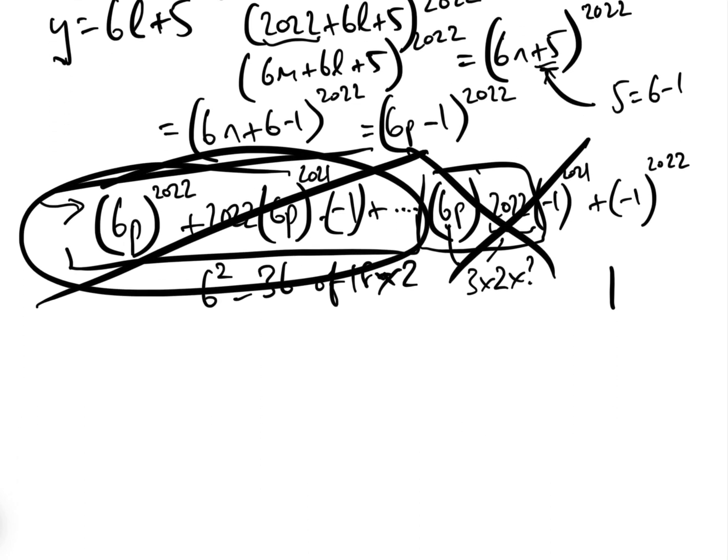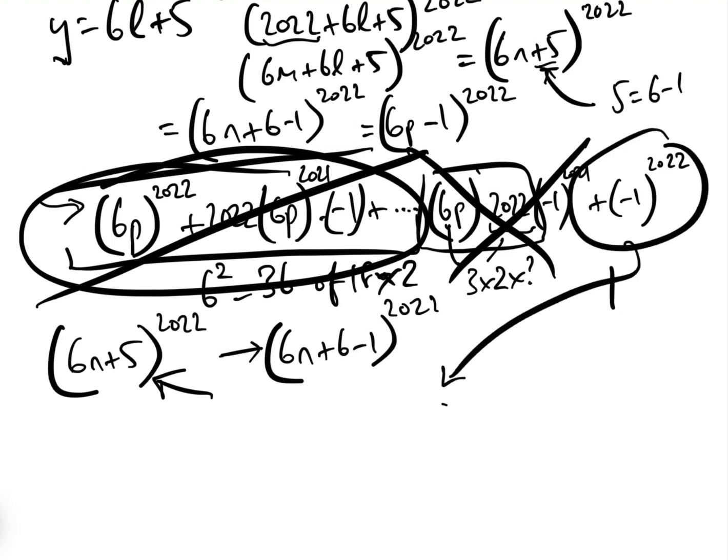Now, just out of interest, if you had not realized that (6n + 5)^2022 could have been written as (6n + 6 - 1)^2022, and we just left it as (6n + 5), and then we'd expanded, we would have been left here with 5^2022. And we would have had to think, well, how can we make that one be a multiple of 18? And what is the remainder?